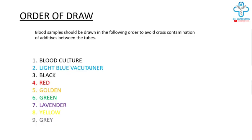Hi everyone, today we will learn about vacutainer tubes and order of sampling in a sequence. Let's get started. Blood samples should be drawn in the following order to avoid cross-contamination of additives between the tubes.